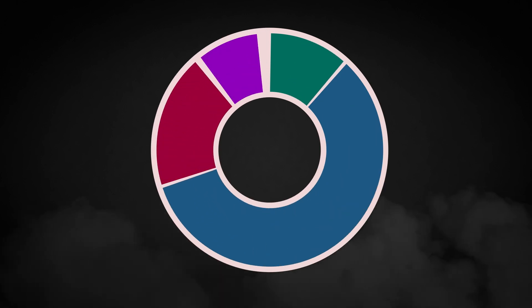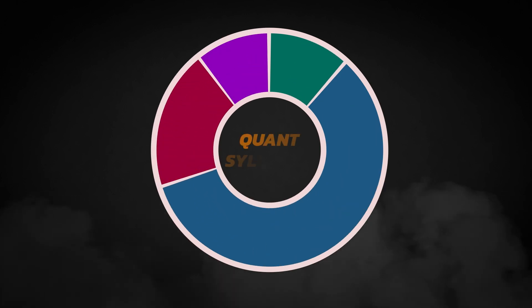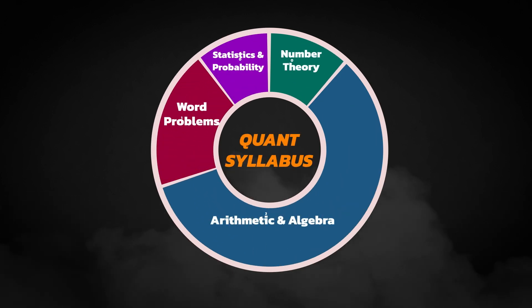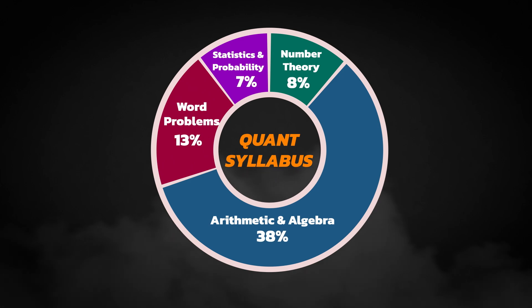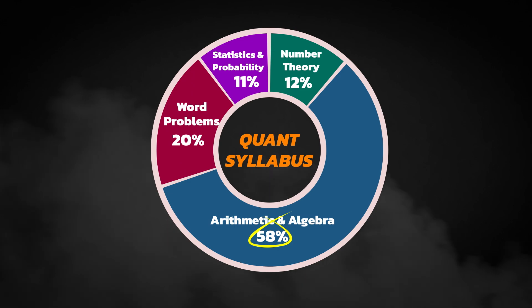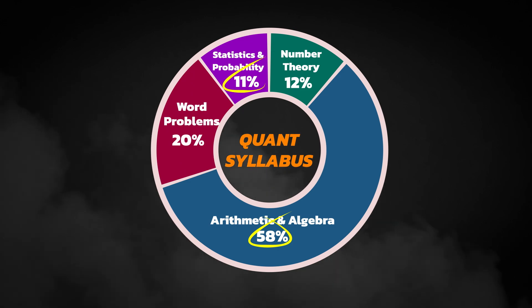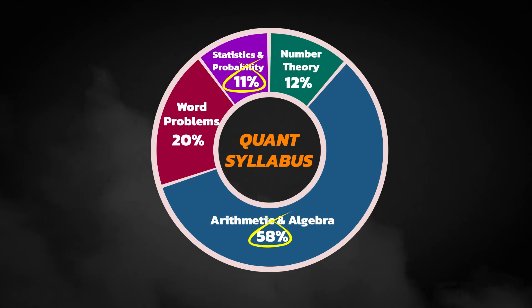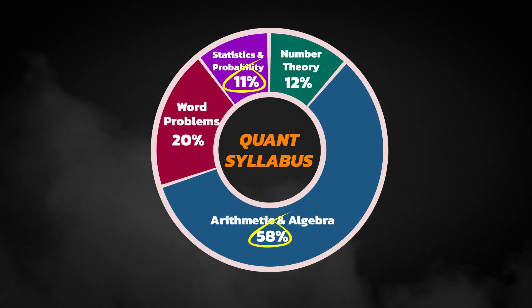We've created this graph if you want to see the distribution of what the Quant syllabus contains. Here's a complete overview of the GMAT Quant syllabus. As you can see, 60% of the questions will be testing arithmetic and algebra, and only about 10% go to deeper topics such as statistics and probability. You want to master these proportionately. Don't spend all your time on probability because you may not see it on the test.